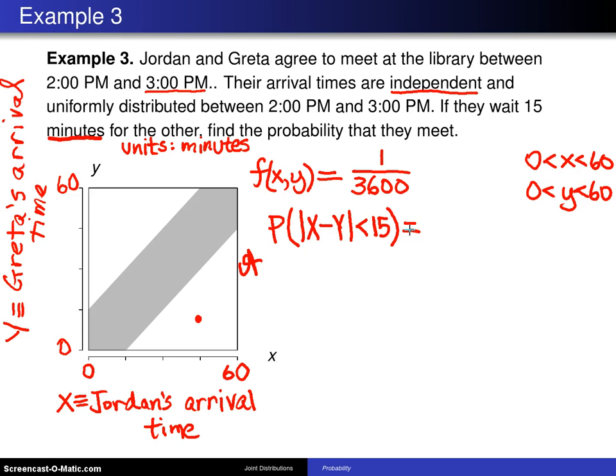X minus y in absolute value being less than 15, that is this shaded region right here. Notice if you're right on the diagonal, this dot right there is Jordan showing up at 2:30 and Greta also showing up at 2:30. Obviously they meet in that case. But this shaded region corresponds to Jordan and Greta meeting, and that is absolute value of x minus y less than 15. The two white triangles here correspond to Jordan and Greta not meeting.